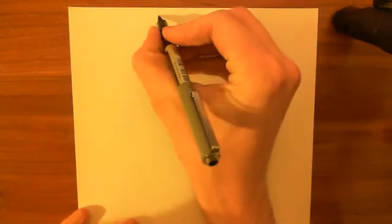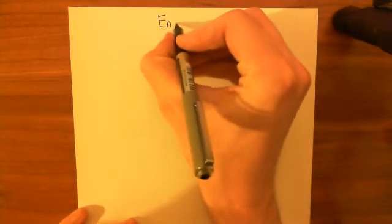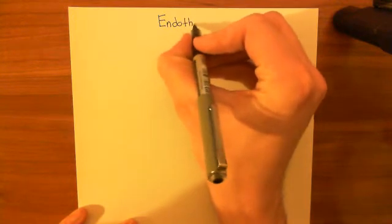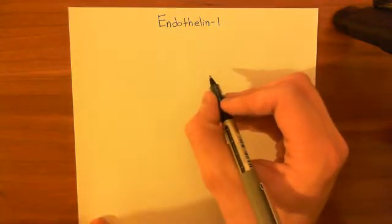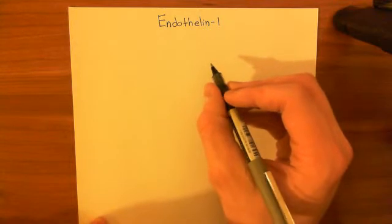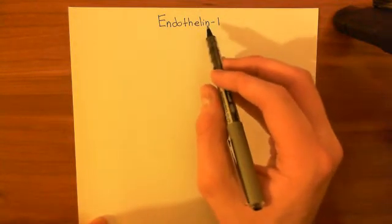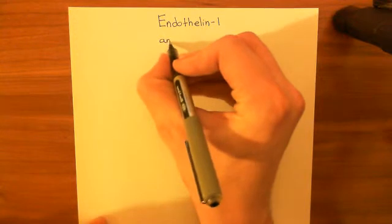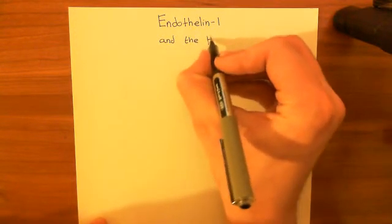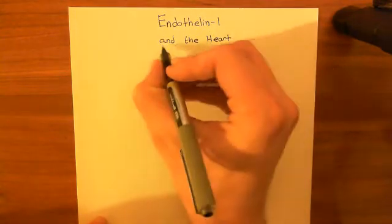Welcome to this next video in the playlist on the heart. In this video, we're going to discuss the effect of endophyllin, specifically endophyllin 1, on the heart. Endophyllins are amongst the most powerfully inotropic substances known to man. They have an incredible ability to induce a more powerful contraction in the cardiomyocytes. We want to explore the mechanism behind this positive inotropic effect of the endophyllins.